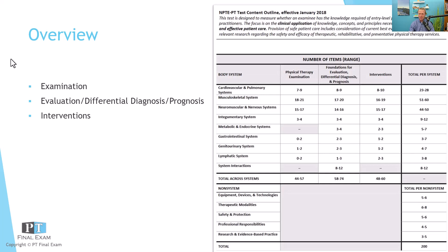Today we'll be talking about the cardiovascular and pulmonary section of the test. This is the little brother of the big three systems, with only between 23 and 28 questions related to this — definitely important, but not quite as big as the neuro and musculoskeletal sections. Let's go ahead and get started with our practice question.